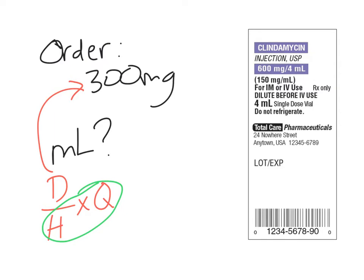Looking at that label, clindamycin actually gives us two dosage strengths, which is a little unusual. There's one option or there's another — which one do we use? It doesn't matter, because what's happening on this label is there's a total of four milliliters in this particular vial. It's telling you how much total medication is in that four milliliters, but then they've simplified it further to say that's the exact same thing as 150 milligrams per each single milliliter. So 600 is to 4 as 150 is to 1 — they're equivalent. Typically it's easier to use the smaller one.